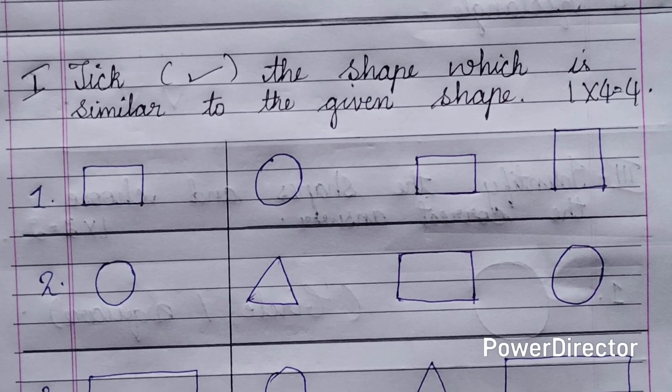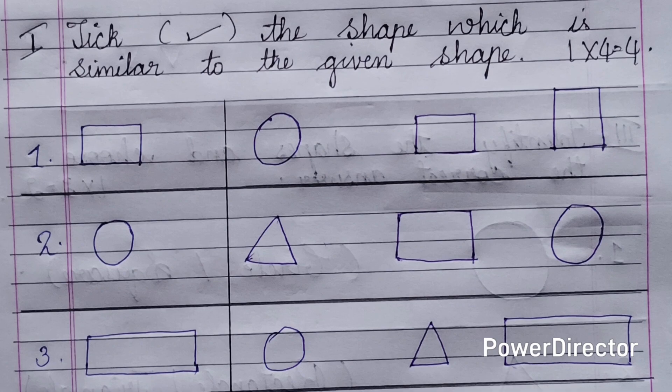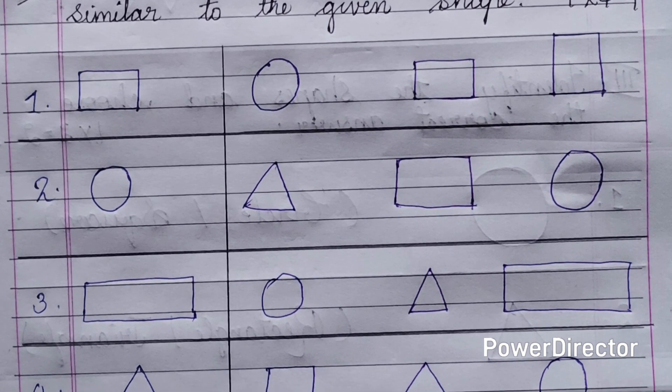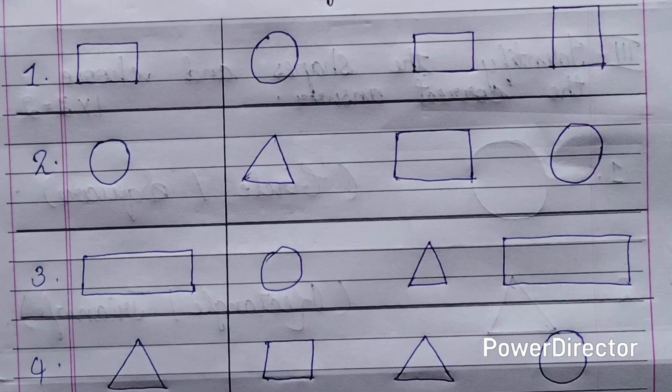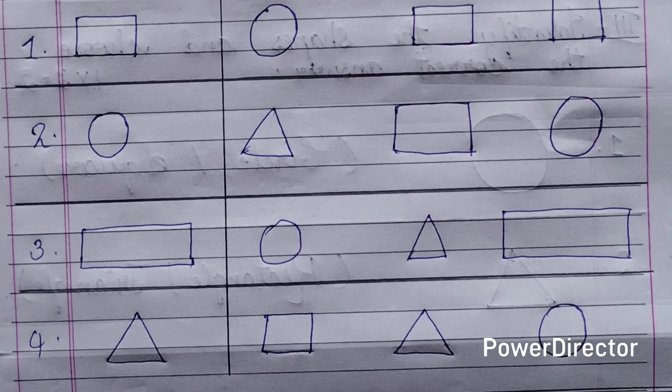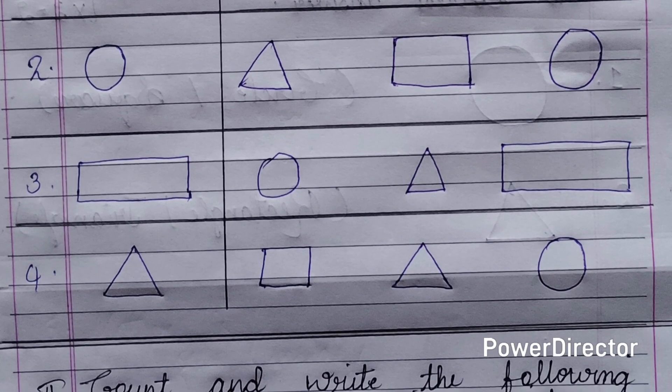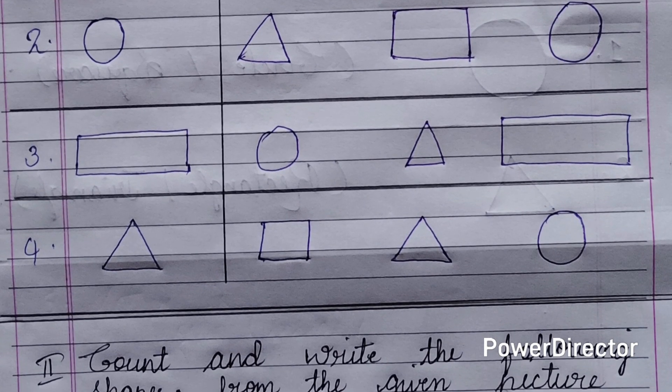On the left side you can see a shape. You have to tick mark the similar shape on the right side of the line. There are four questions: first is square, second is circle, third is rectangle, and fourth is triangle.